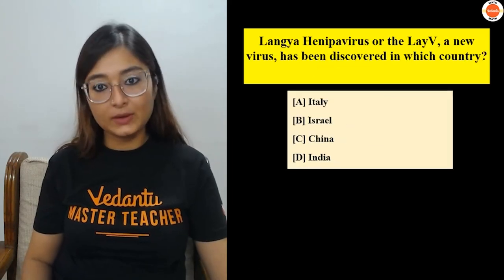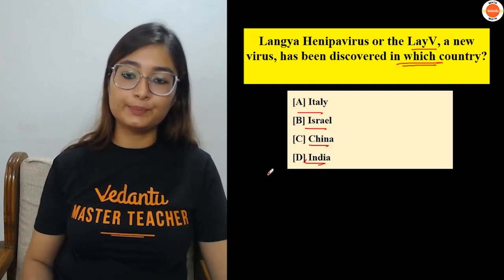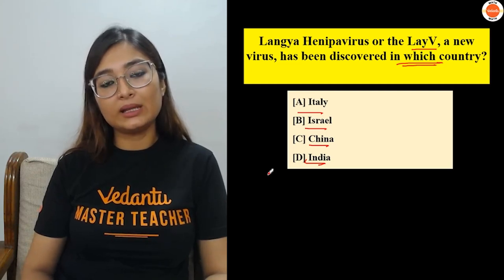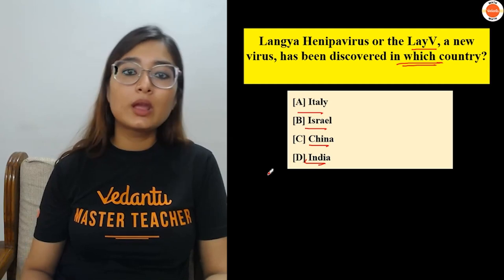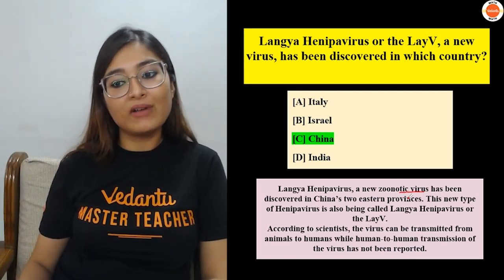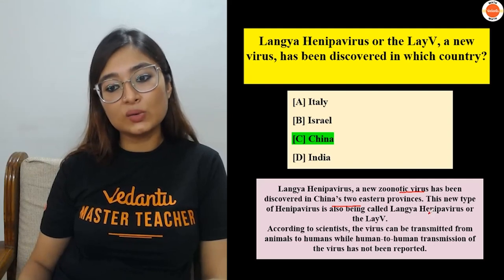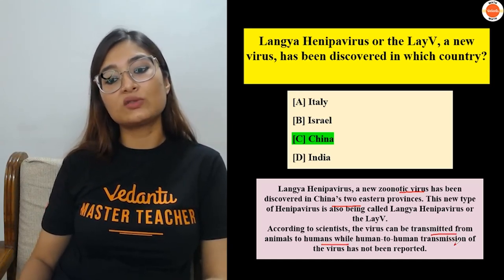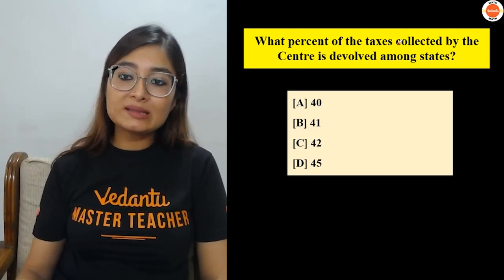Next question: The Langya Henipavirus (also known as Langya virus or LayV) was discovered in which country? Options: Italy, Israel, China, or India. The correct answer is China. This is a new zoonotic virus discovered in two eastern provinces of China. It is a new kind of Henipavirus, also known as the Langya Henipavirus. Scientists have said this virus can spread from animals to humans, though human-to-human transmission has not yet been reported.